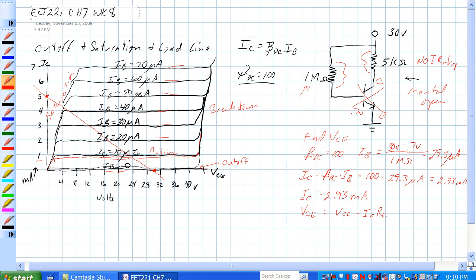And we know the value of IC and RC. So that is 29.3 milliamps, or excuse me, it's 2.93 milliamps. Let me get rid of some of this. 2.93 milliamps times 5K ohms. So VCE is equal to 15 volts minus 14.65 volts is equal to 15.35 volts.